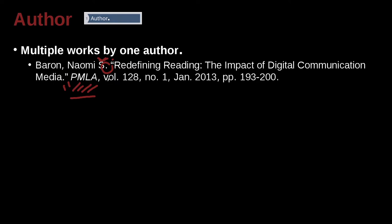Then we have another comma, and then volume — 'vol.' with a lowercase v — then the number. Then 'no.' for number, a space, and number one. Then a comma, space, and then January 2013, pages 193 to 200. We don't always have the month, but if the journal uses that approach, then you go ahead and put it in. If they don't, then you don't.